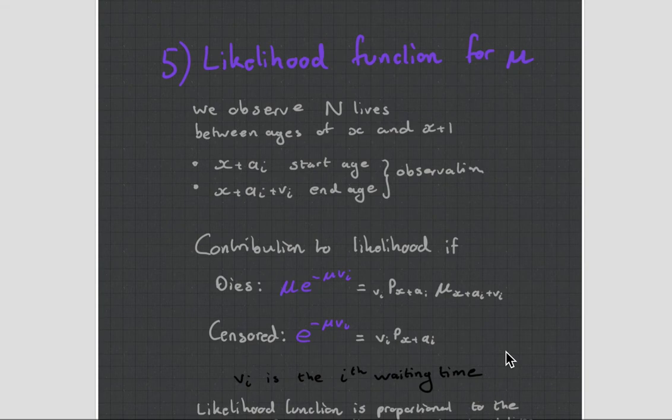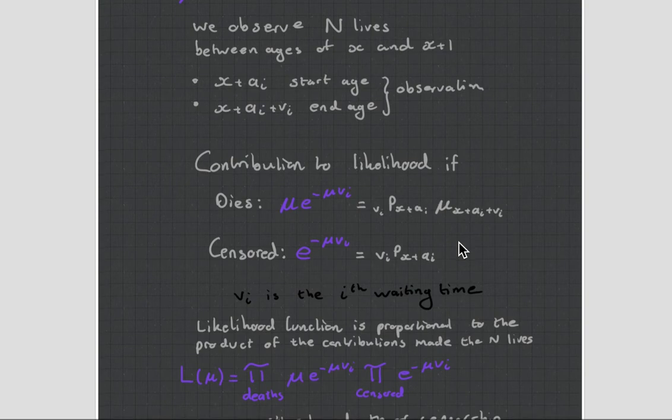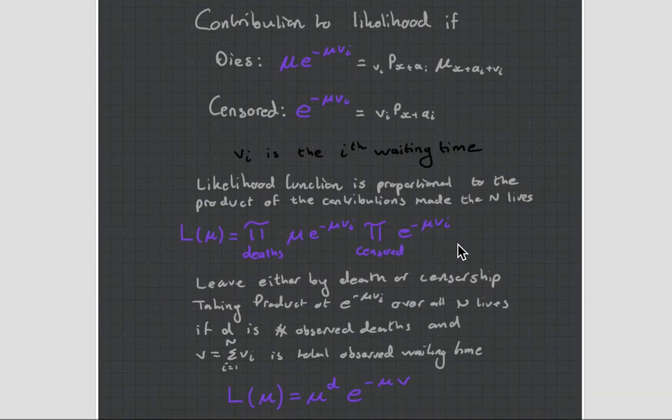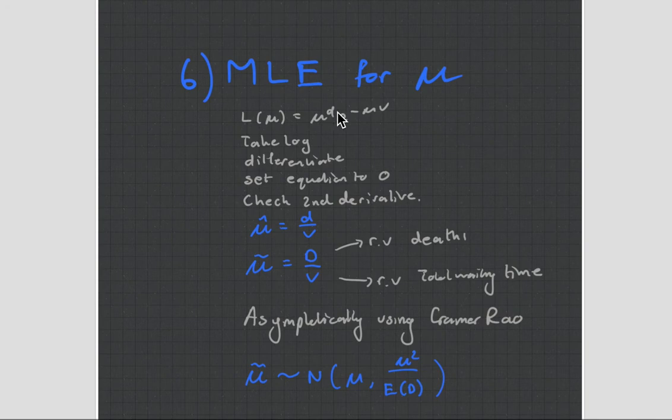Then there's this whole likelihood function. And if you've done subject CT3, likelihood functions should come naturally to you. If anyone is struggling with them, let me know—I'll maybe make a CT3 video on the likelihood functions. And then the maximum likelihood estimate—you basically take the log, differentiate, set the equation to zero, and check the second derivative. But they are very simple once you understand the concepts. They're basically saying you count the amount of deaths divided by the amount of transitions to get the force of mortality type of thing. So yeah, I know I'm jumping very quickly through this, but I don't want this video to be too long. And this is very much subject CT3 work.